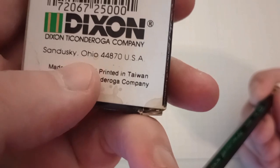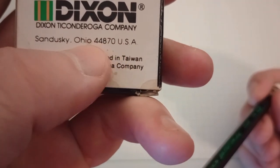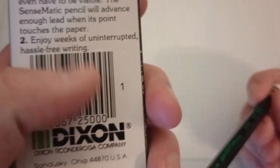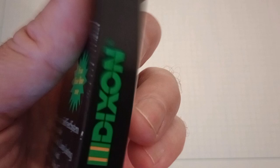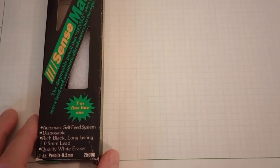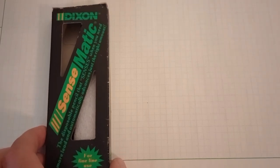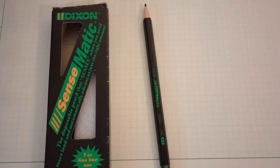By the way, there's Sandusky, Ohio. I didn't know Dixon ever had headquarters in Ohio. That's interesting. 1988, so that was when really mechanical pencils were just starting to overtake woodcase pencils in classrooms for middle schoolers and high schoolers say.